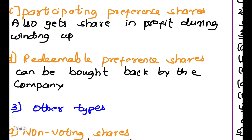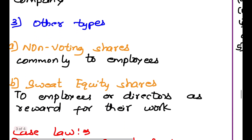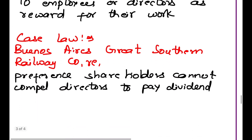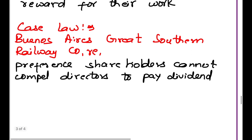Redeemable preference shares can be bought back by the company. Other types include non-voting shares, commonly given to employees who don't have voting rights. Sweat equity shares are given to employees or directors as a reward for their work. Case Law: Buenos Aires Great Southern Railway Co. RE — preference shareholders cannot compel directors to pay dividends; they cannot force directors to pay the dividend.